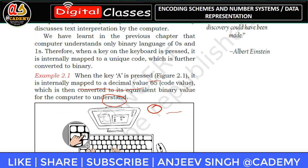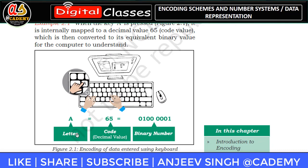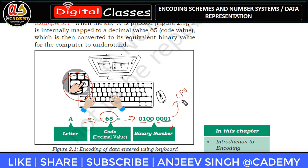When you press the key 'A', see how it is processed inside the computer. You press 'A'; the equivalent code value of letter 'A' is 65. That code value is then converted into binary code — 01000001 — and this binary code is what goes to the CPU for further processing.